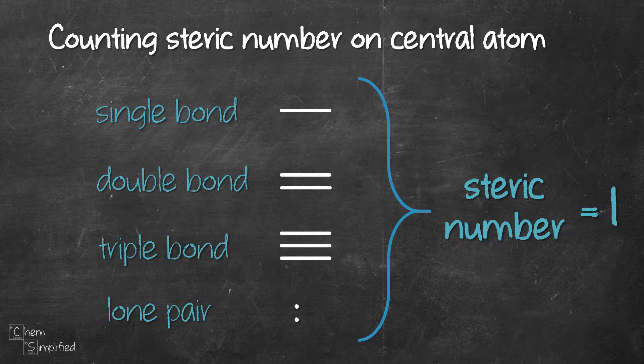This will make more sense when we go through some examples. Just keep this in mind: single, double, triple bonds, and lone pairs are all counted as one group.